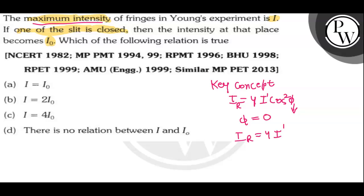Now, if one slit is closed, the resultant intensity will be equal to the initial intensity from that one slit, which means I' = I₀. So the maximum intensity I = 4 times I₀, which suggests that option C is the correct answer. I hope you get the concept. All the best.